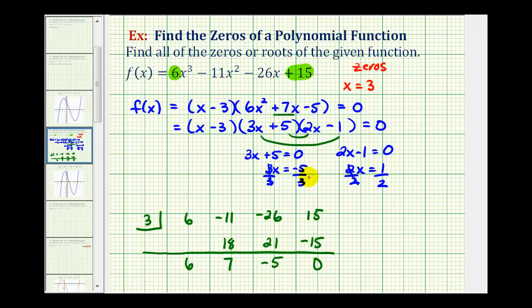So again, our three zeros are positive 3, negative 5/3, and positive 1/2. Again, all of these are real and rational, so notice they all could have been found by looking at the factors of 15 divided by the factors of 6. But there would obviously be a lot of factors to try to find these three.